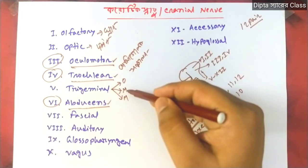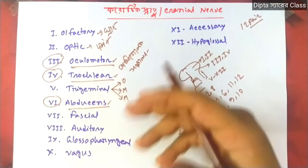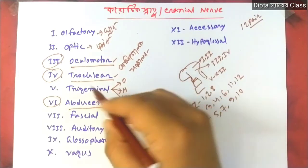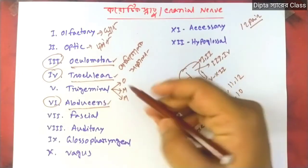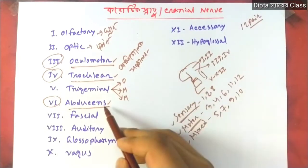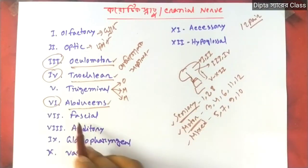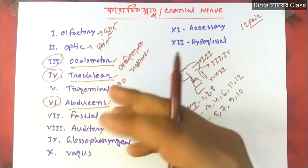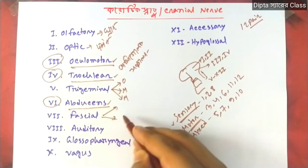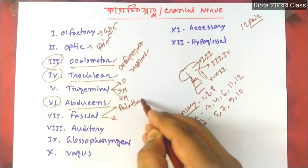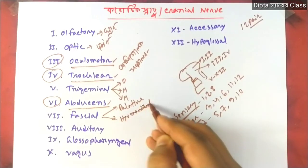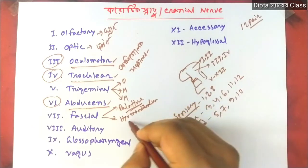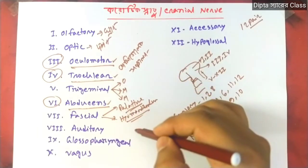The Trigeminal nerve has three branches which are sensory cells. This is where the three branches are distributed. The Facial nerve is mainly supplied to the facial muscles and the mouth area.